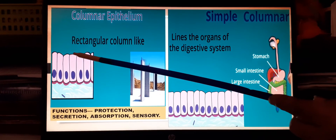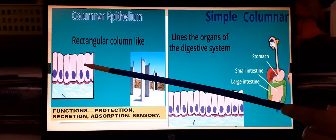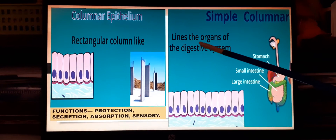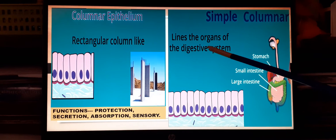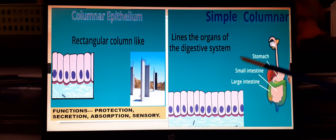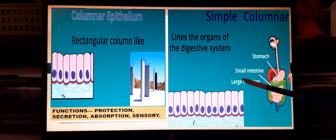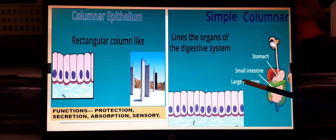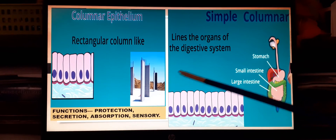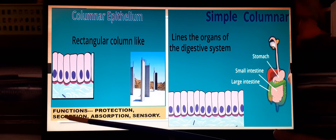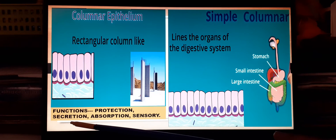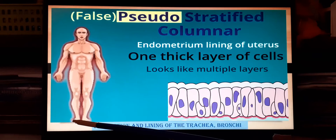Columnar epithelium is present in the later part of the digestive tract — in the stomach, small intestine, and large intestine — where apart from protection, it also plays the role of secretion, absorption, and sensory function.